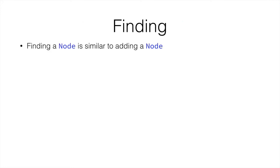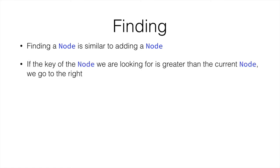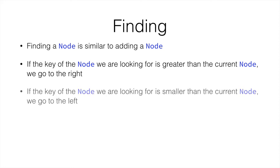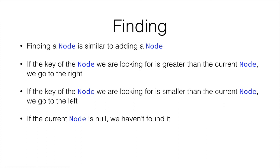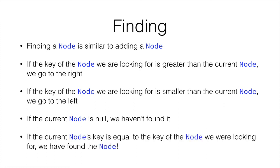Finding a node is similar to adding a node. Instead of creating a new node, we simply stop when we get to a null. If the key of the node we're looking for is greater than the current node, we move to the right. If it is smaller, we go to the left. If the current node is null, it means we haven't found the node, because if we had, we would eventually get to a key equal to the one we're searching for. If we find the node, we simply return and exit — we'll never get to a null.